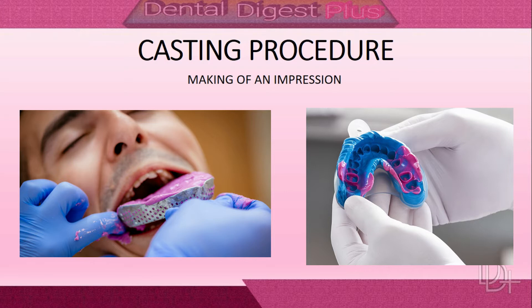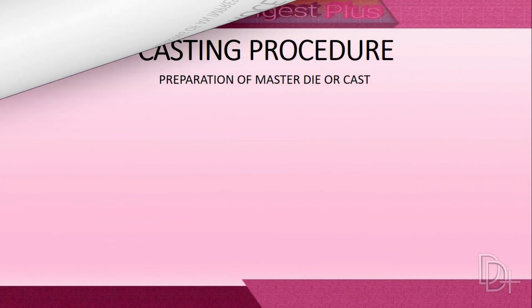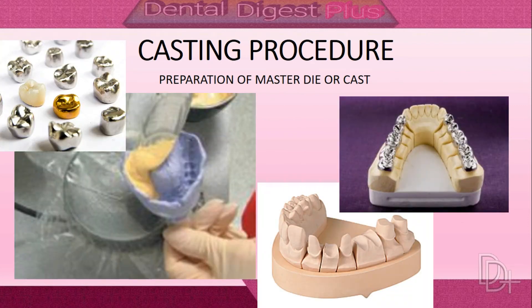In the impression step, an impression of the prepared tooth structure is made using proper impression material. Each and every detail of the prepared tooth structure should be recorded into the impression, which is the negative replica of the prepared tooth.